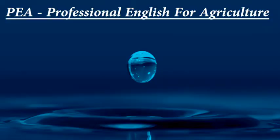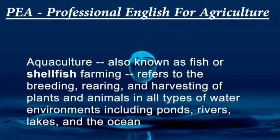Welcome to PEA — Professional English for Agriculture. Our lesson today is: what is aquaculture? Aquaculture, also known as fish or shellfish farming, refers to the breeding, rearing, and harvesting of plants and animals in all types of water environments.